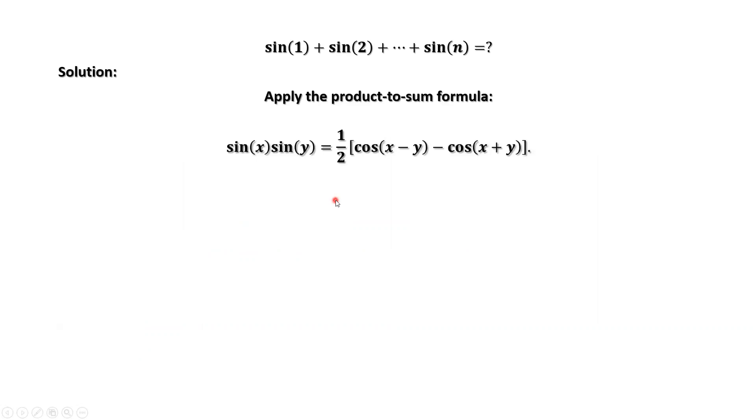This is the formula we are going to use. The product to sum formula. Sine of the first angle times sine of second angle equals one half times cosine of the first angle minus the second angle, minus cosine of the first angle plus the second angle.